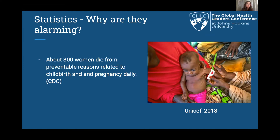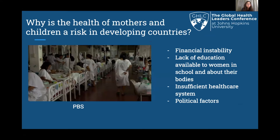These numbers are alarming because they indicate that third world countries aren't giving women the adequate health care they need to go through pregnancy and childbirth. There's a gap and underlying problem in the government that isn't being addressed, causing women and children to suffer. Oftentimes, the countries most affected by maternal and child deaths are the ones where poverty rates are extremely high and where there are financial hardships in families. The most common reasons why the health of mothers and children are at risk include financial instability, a lack of education given to women about their bodies, an insufficient health care system, and political factors.